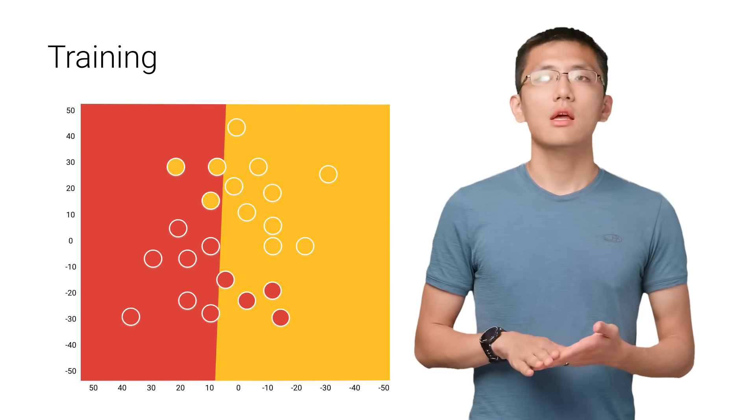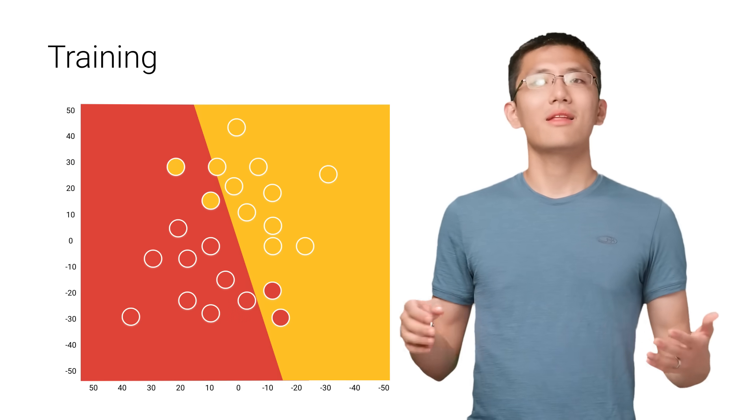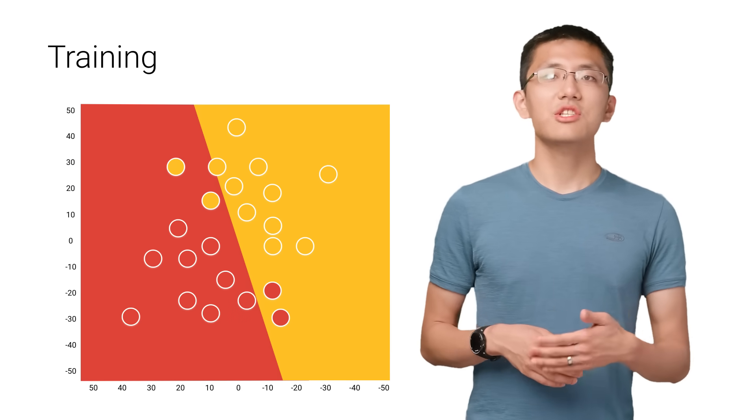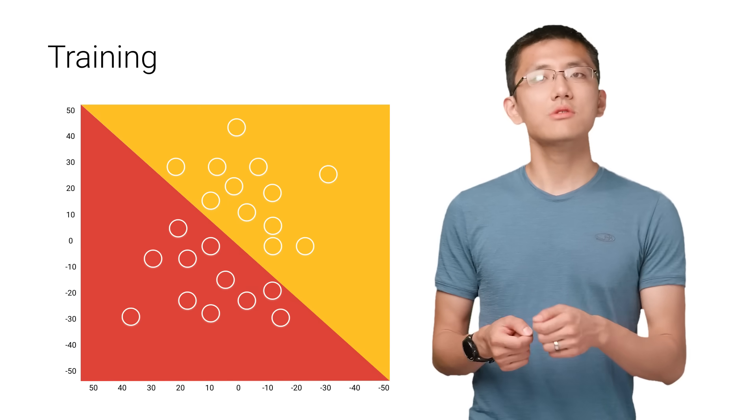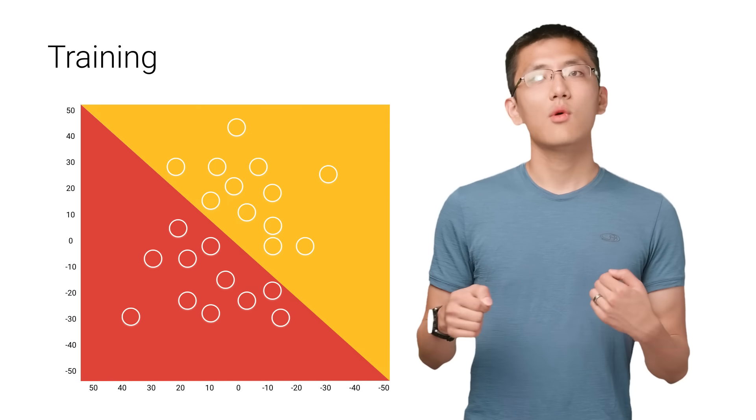When we first start the training, it's like we drew a random line through the data. Then, as each step of the training progresses, the line moves step by step, closer to the ideal separation of the wine and beer.